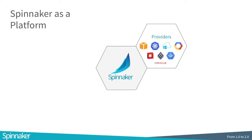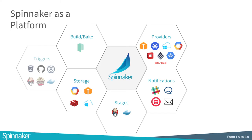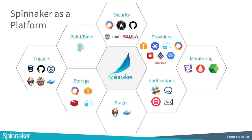Looking at the larger Spinnaker platform, there's a lot more going on: first-class notification integration with Slack and HipChat, persistent storage with the big three plus Redis, build and bake with Packer from HashiCorp, stages with Jenkins, triggers with Git, Docker, Travis CI, and Jenkins, security, and we're adding monitoring - Datadog, Prometheus, and Stackdriver. 1.0 is about getting the core product enterprise-ready. Looking ahead, growing the community and making it more extensible are core themes.